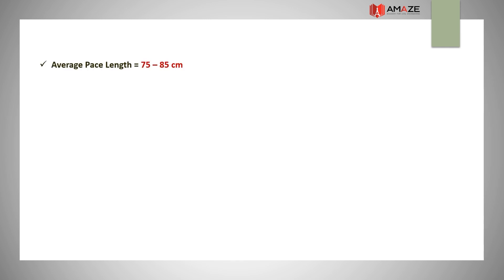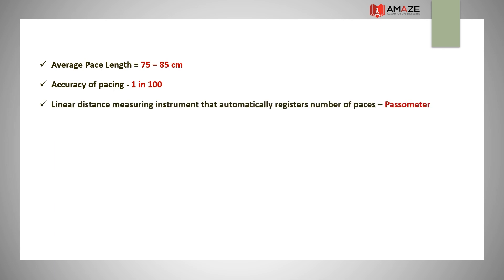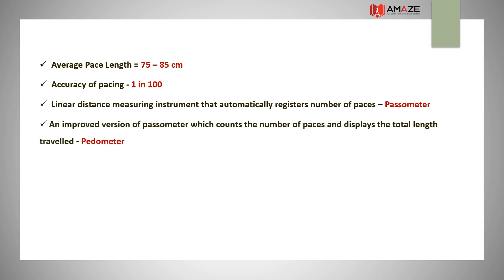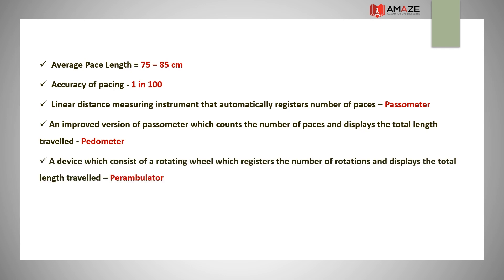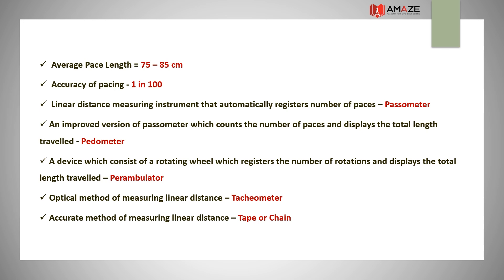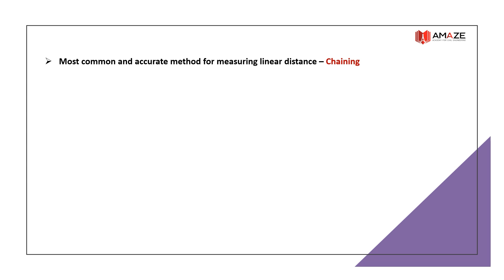Average pace length is 75–85 cm, commonly taken as 80 cm. Accuracy of pacing is 1 in 100. A linear distance measuring instrument that automatically registers the number of paces is a passometer. An improved version of the passometer which counts paces and displays total length traveled is a pedometer. A device consisting of a rotating wheel which registers the number of rotations and displays the total length traveled is a perambulator. The optical method of measuring linear distance is tachyometry, and the most accurate method is chaining.